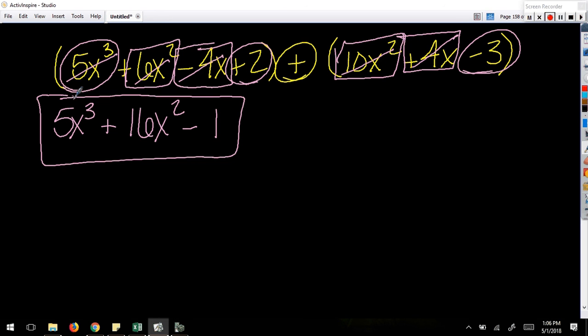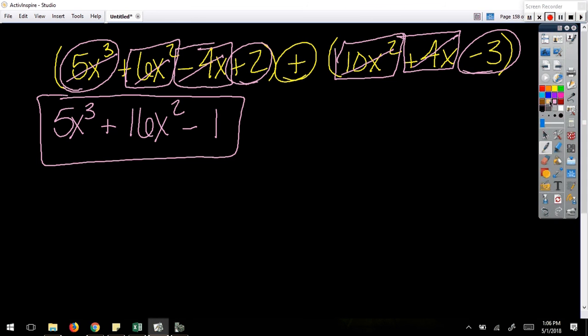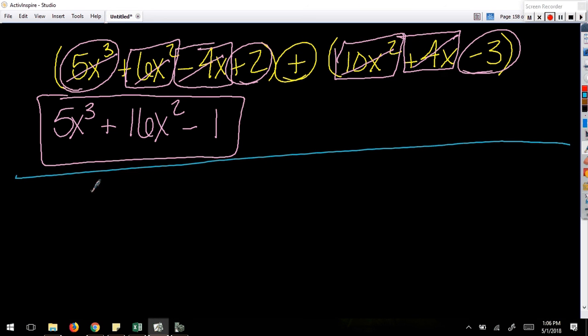I have now added these polynomials together. Now let's take these same two polynomials and instead of adding them, let's subtract them, because this is where it starts getting a little stickier. So I've got 5x³ + 6x² - 4x + 2, and I'm going to subtract from that 10x² + 4x - 3.